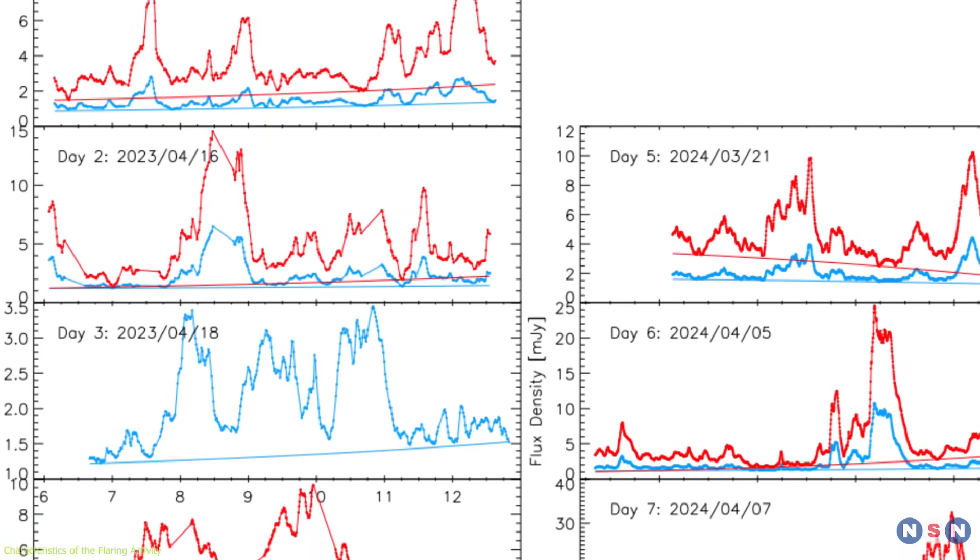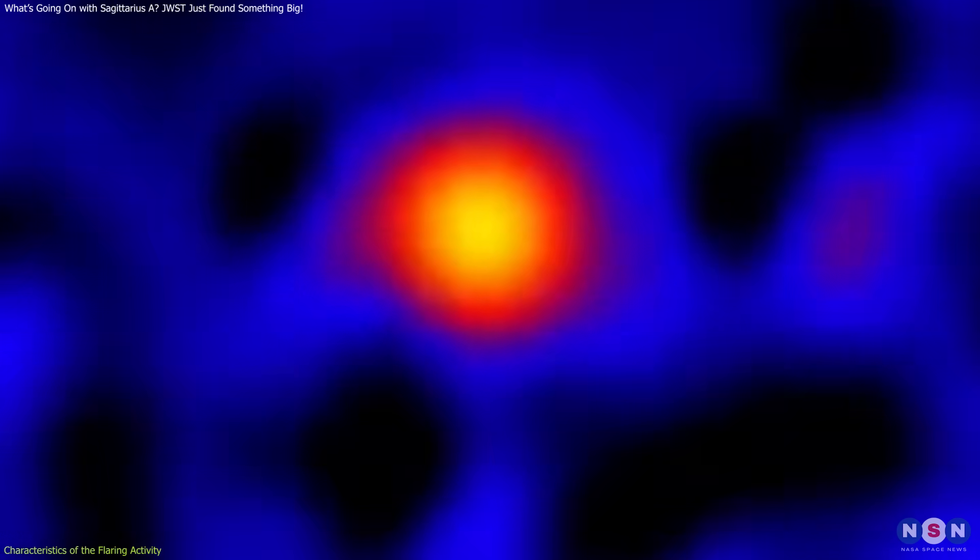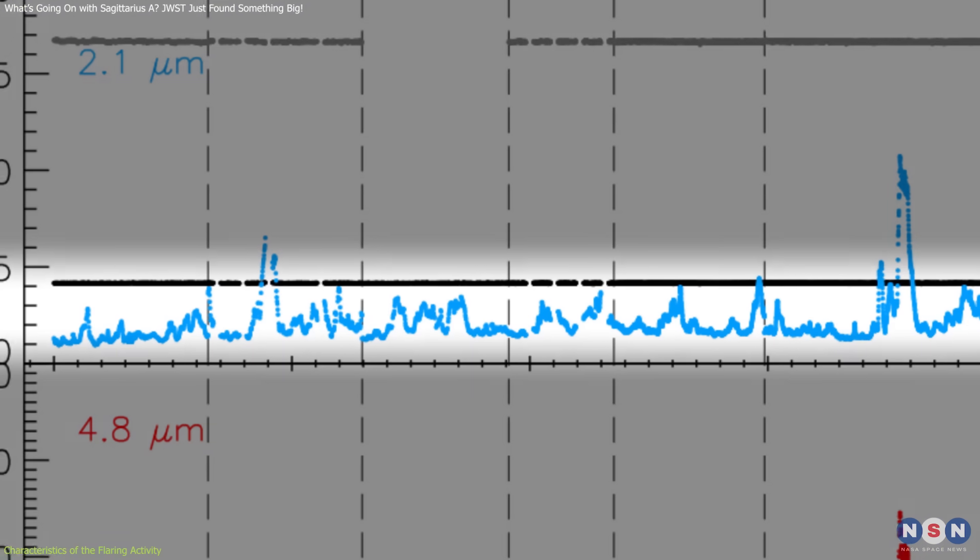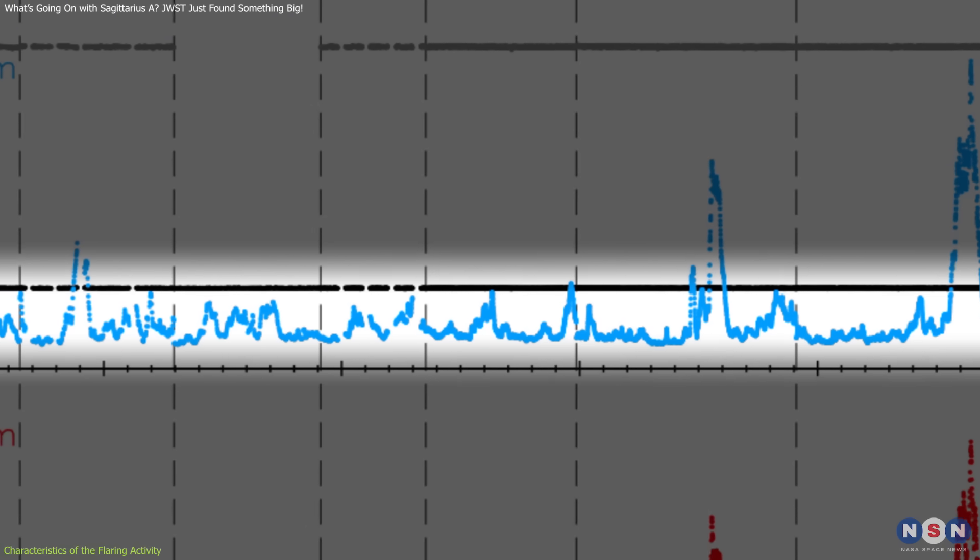On average, this black hole produces 5 to 6 significant flares daily, each varying in intensity and duration. Interspersed among these are numerous sub-flares, adding layers of complexity to the emission profile.